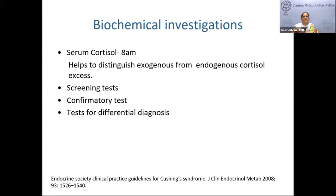For biochemical investigations, the most important first step is to check a morning serum cortisol to distinguish exogenous from endogenous cortisol excess. Exogenous glucocorticoids (except hydrocortisone) suppress the HPA axis, giving a low morning cortisol. Hydrocortisone itself will give a high cortisol reading. Check all tablets and medications the patient is on before testing, then proceed with screening tests, followed by confirmatory tests, and finally differential diagnosis.